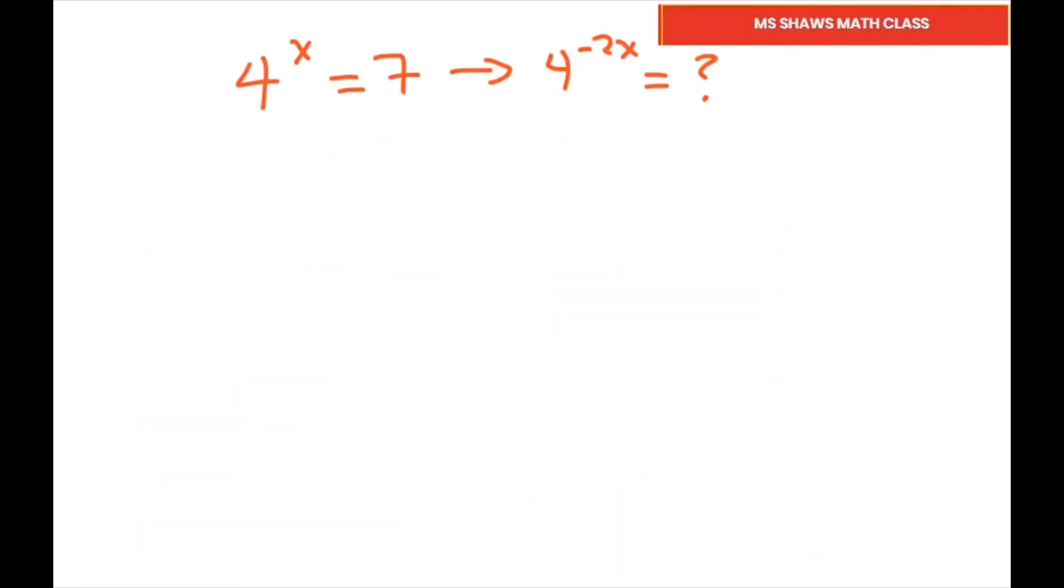So here's the first one. It says if 4 to the x power equals seven, then what does 4 to the negative 2x equal? I'm going to write this as 4 to the x because I know what 4 to the x equals, and I want these two to equal. To make this equal, I had to put a negative 2 out here.